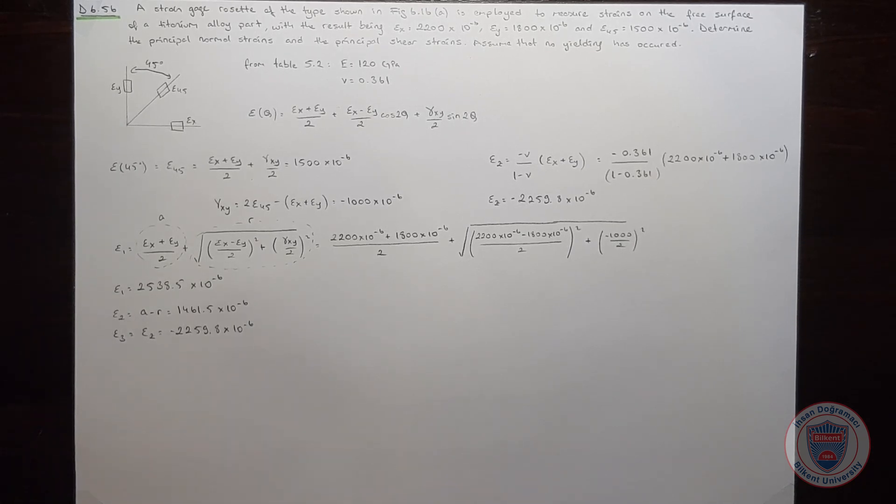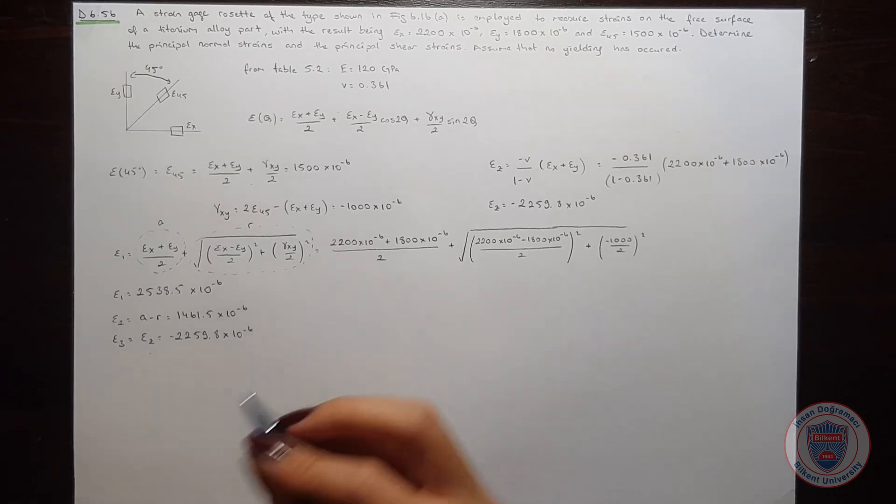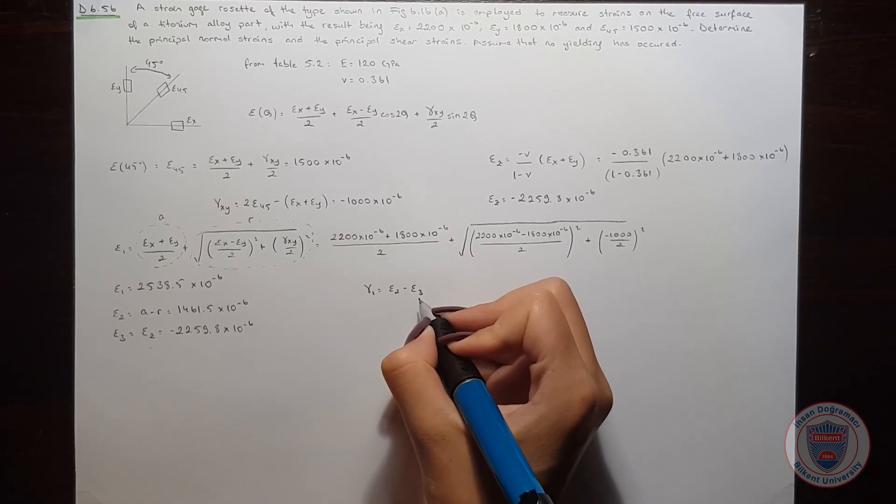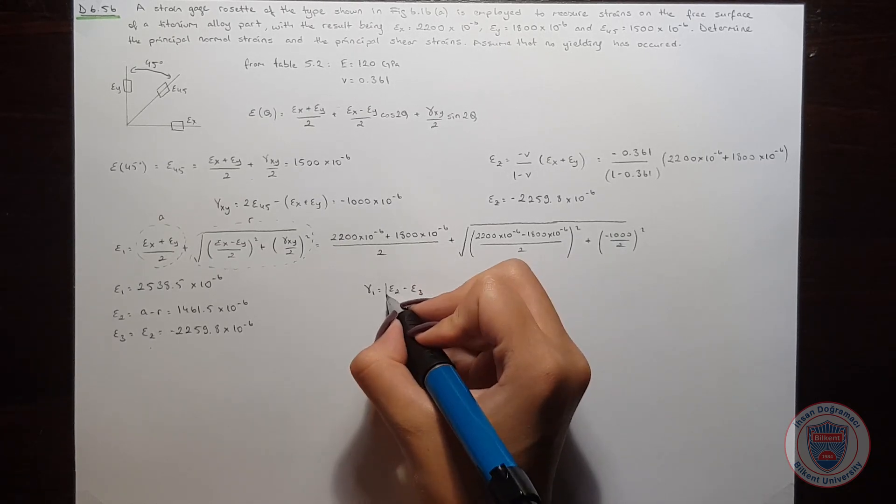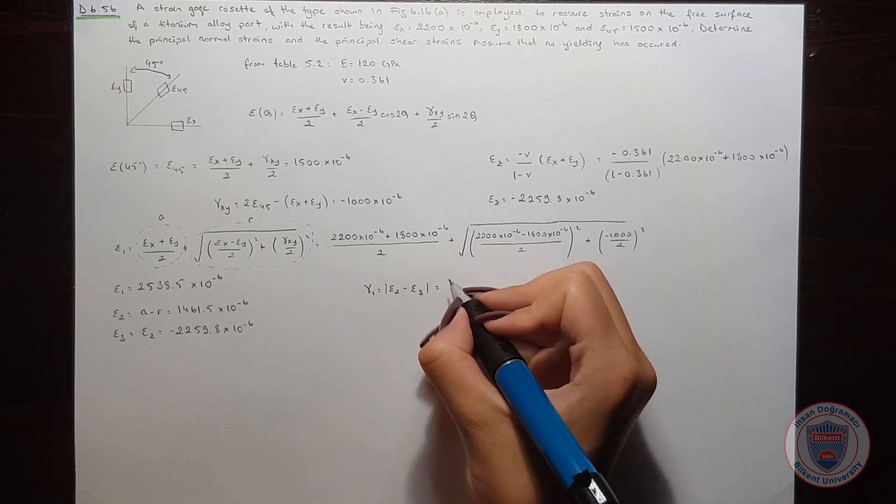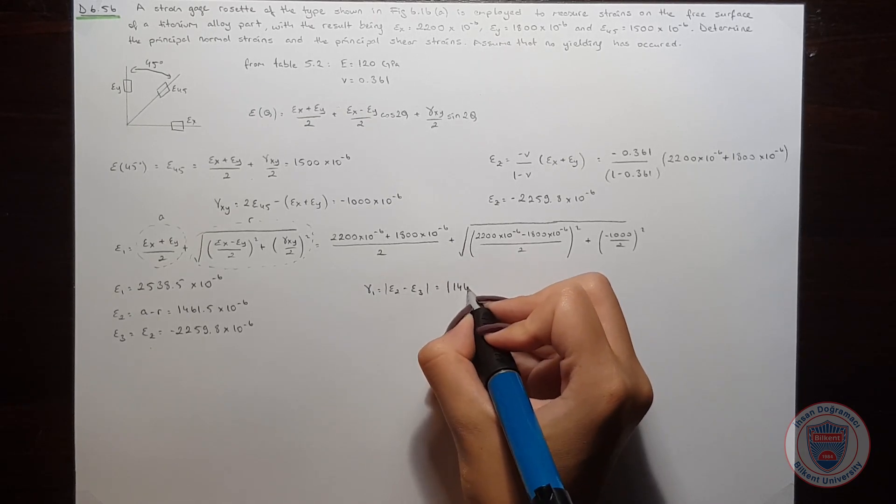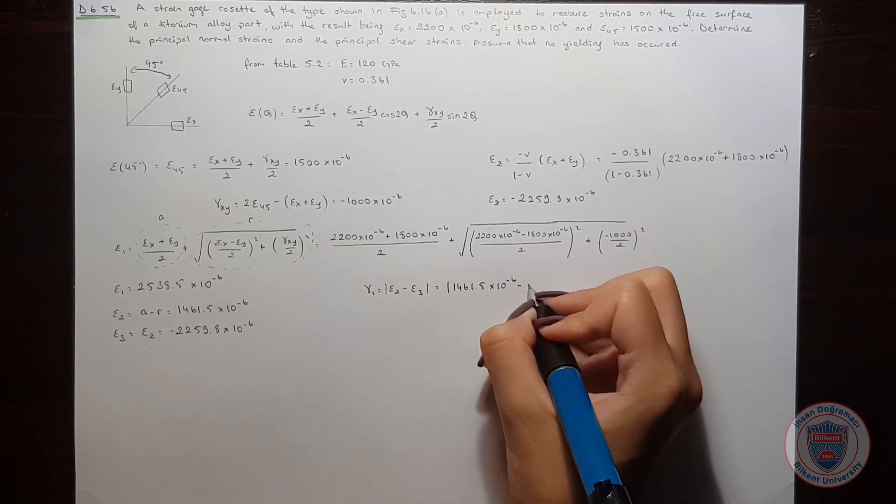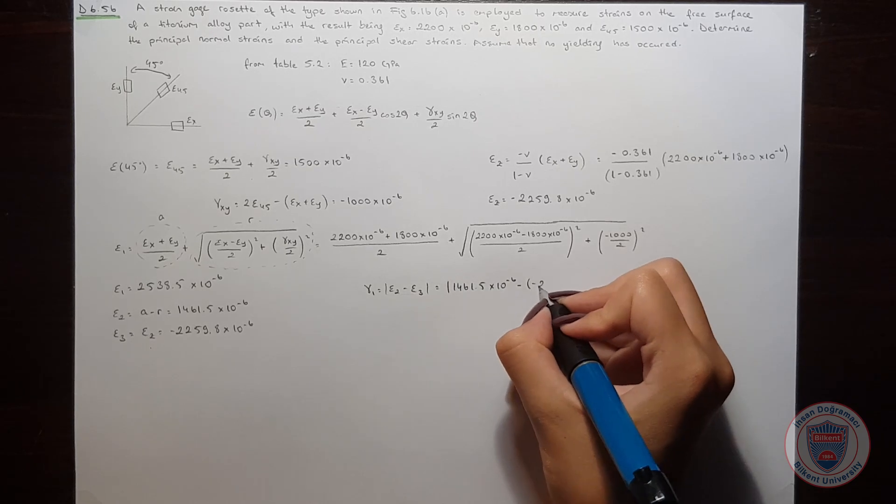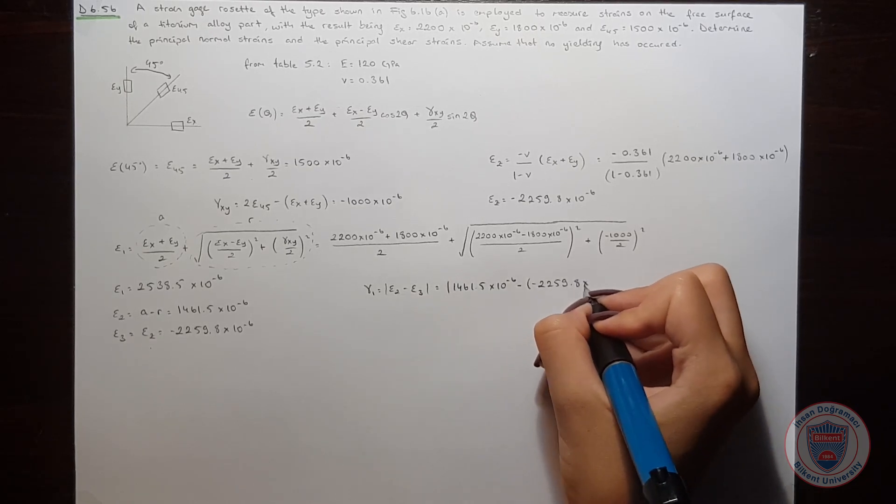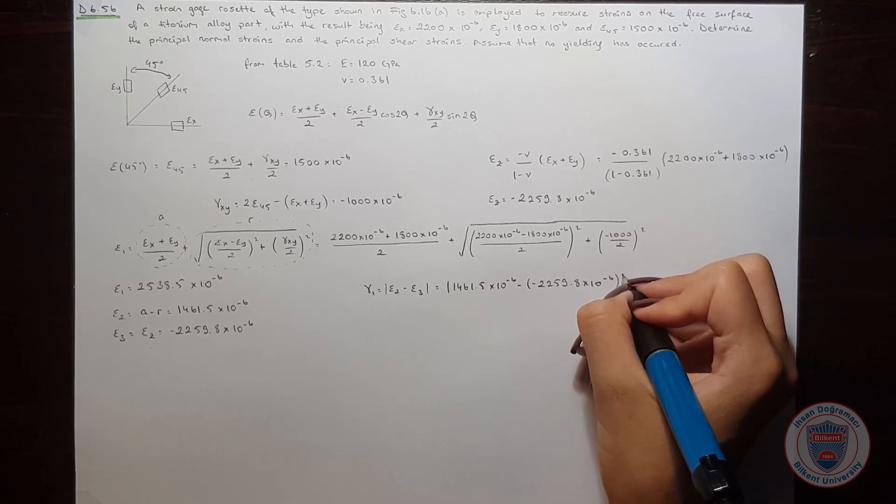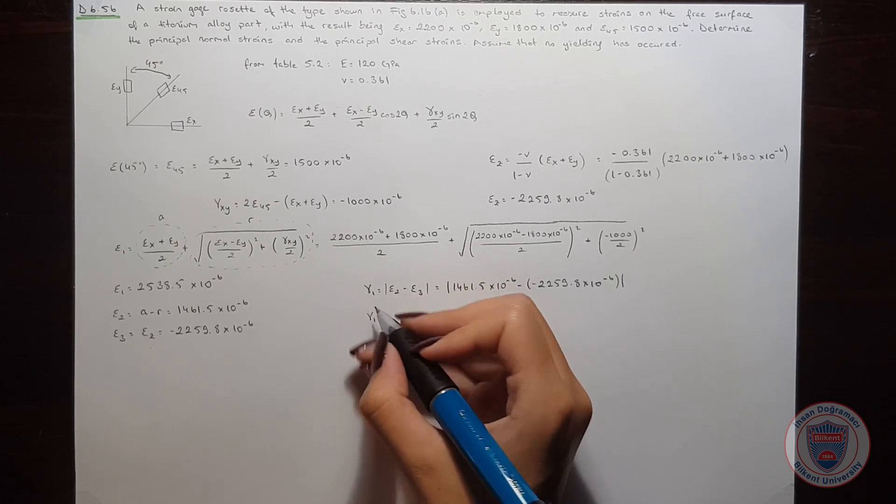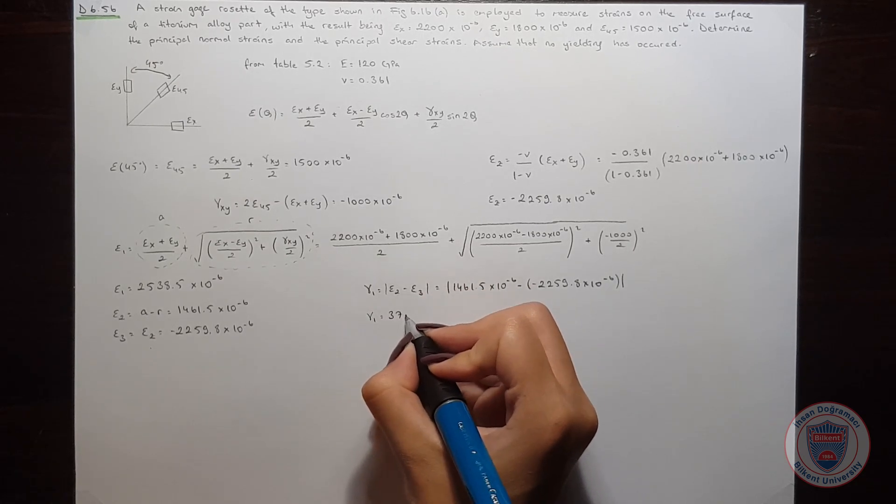Since we calculated the principal normal strains, we can now calculate the principal shear strains. We know that γ1 will be equal to ε2 minus ε3. So we know that γ1 is equal to 3700.5 times 10 to the power of minus 6.